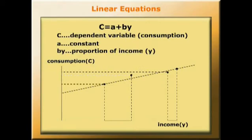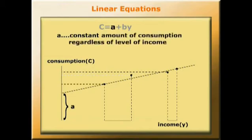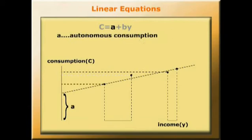Let's focus for a moment on A. A is the amount of consumption even when there's zero income. It's a constant amount of consumption regardless of the level of income, or as we economists say, it's autonomous consumption. Consumption independent of the level of income.